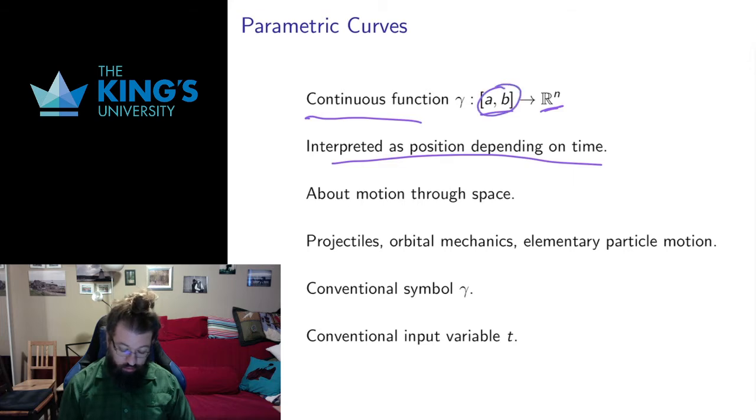So this is some range in time, and we're thinking of the vectors we output as the positions of some point as we're moving through time. That means parametric curves are about motion through space, which means they're appropriate for modeling things like projectiles, for doing orbital mechanics, talking about satellites,